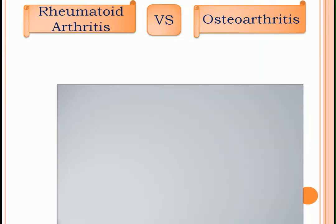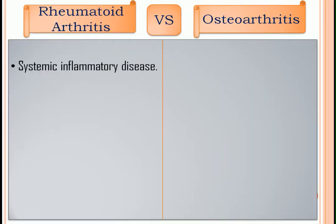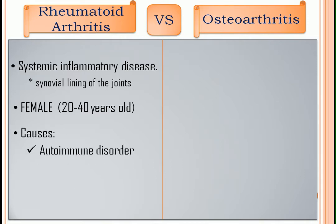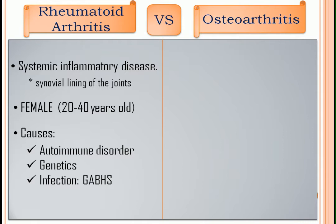Rheumatoid arthritis. It is a systematic inflammatory disease that affects the synovial lining of the joints. It is common to women of 20 to 40 years of age. Causes: It is an autoimmune disorder. The antibody attacks the synovium of the joint that will result to inflammation and swelling. Next is genetics. Then, infection — caused by the group A beta-hemolytic streptococci.